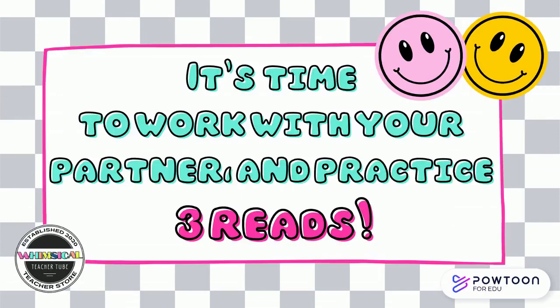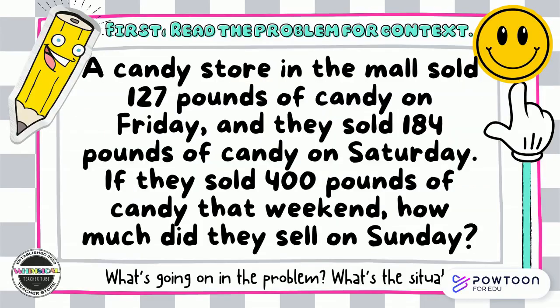It's time to work with your partner and practice three reads. First, read the problem for context. A candy store in the mall sold 127 pounds of candy on Friday and they sold 184 pounds of candy on Saturday. If they sold 400 pounds of candy that weekend, how much did they sell on Sunday? What's going on in the problem? What's the situation? Pause the video and talk to your partner.